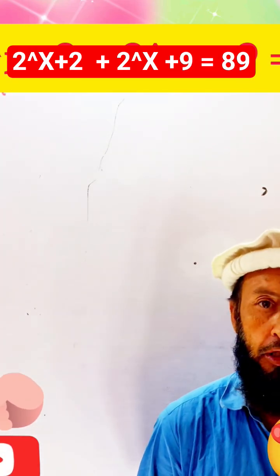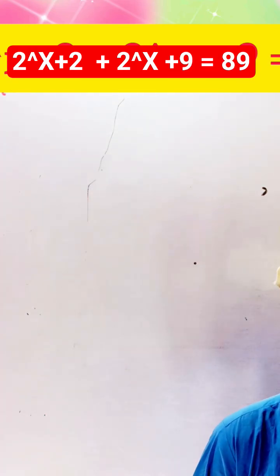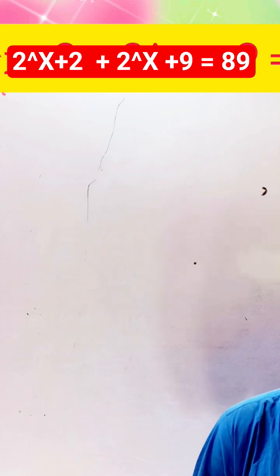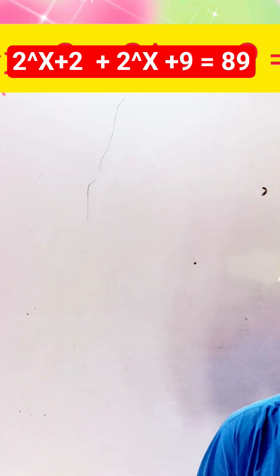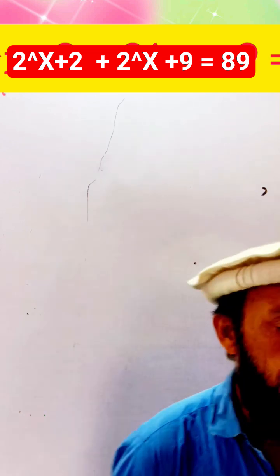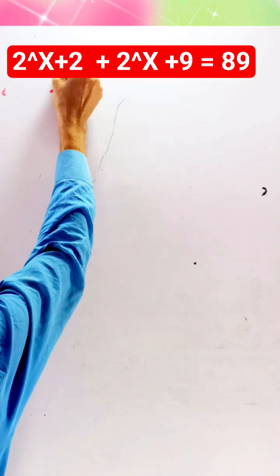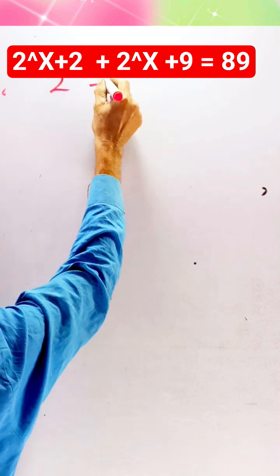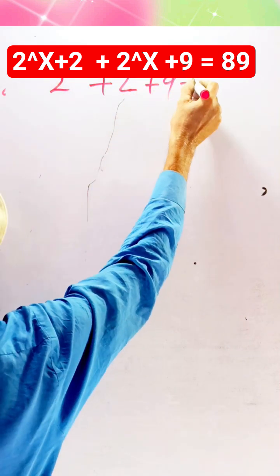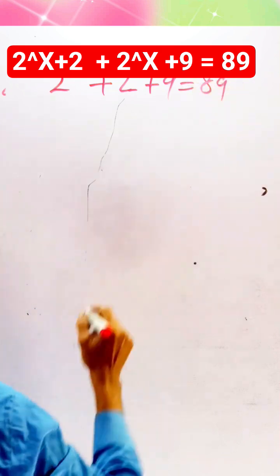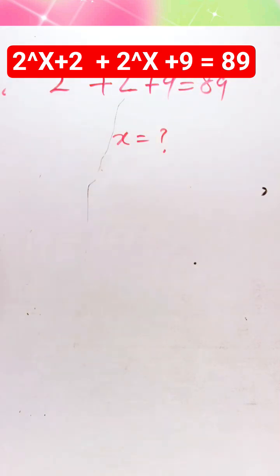Today we have a new exponential equation — a very interesting and logical question. We will calculate the value of x from the exponential equation. We start with: 2 exponent of (x plus 2) plus 2 exponent of x plus 9 is equal to 89.